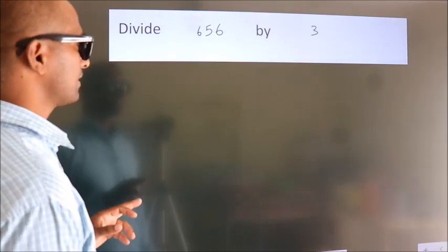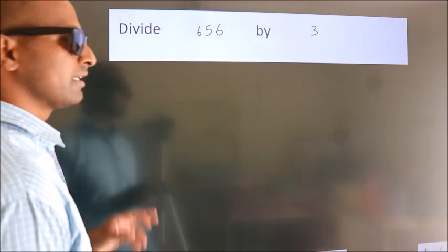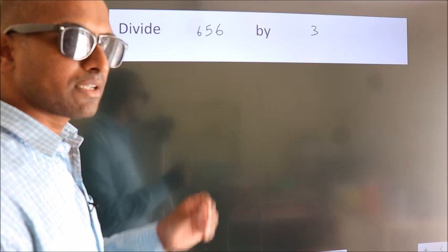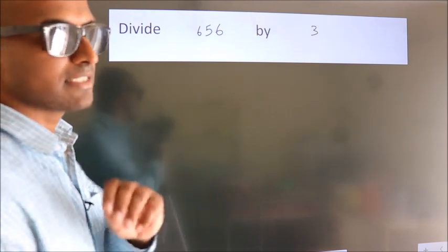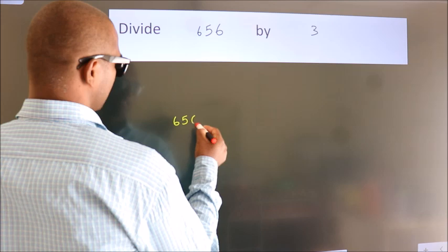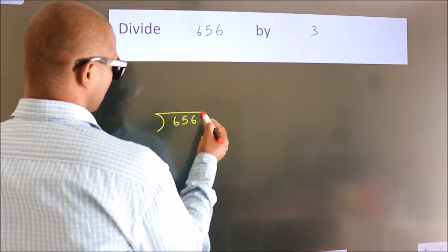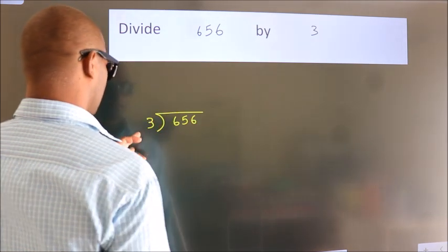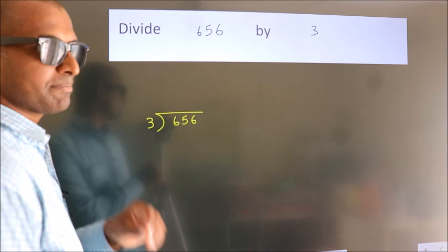Divide 656 by 3. To do this division, we should frame it in this way. 656 here, 3 here. This is your step 1.